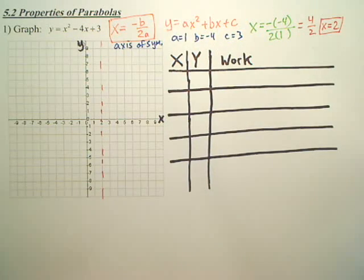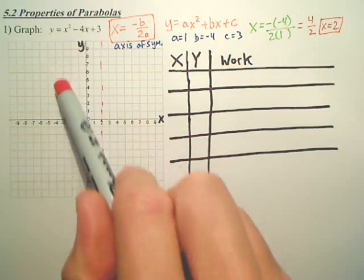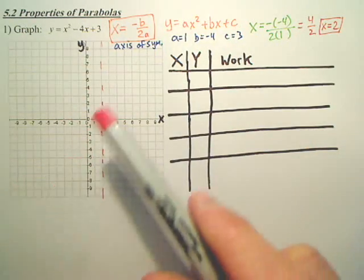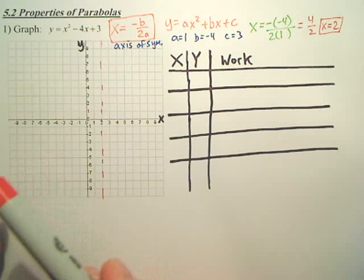Now, what's important about that red dotted line is your parabola is going to wrap around that somehow. Somehow, that's the center of your parabola. It's going to fold on it.